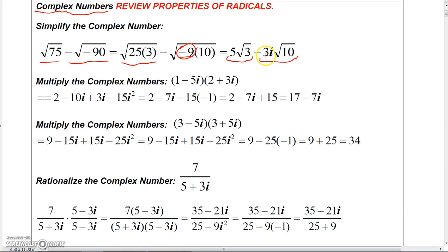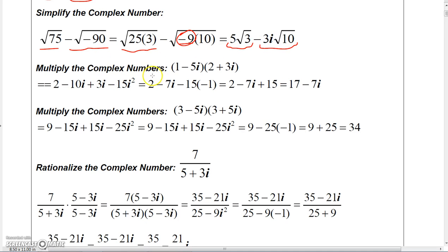When you multiply complex numbers, you can FOIL if you have two binomials. So if I have (1 - 5i)(2 + 3i), I can just use FOIL. If you don't know what FOIL is, do a search for it.